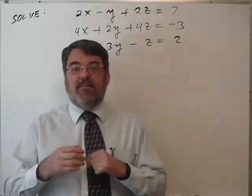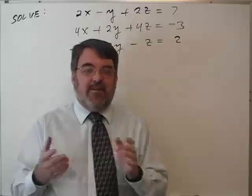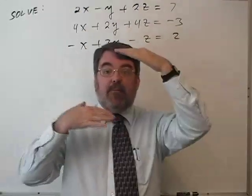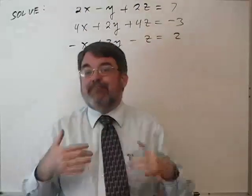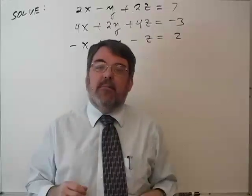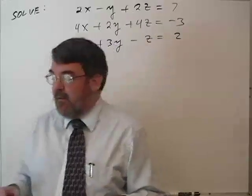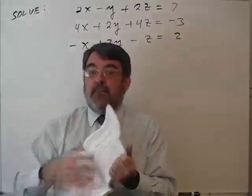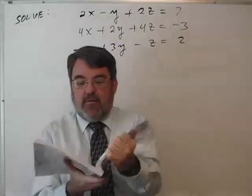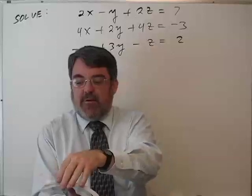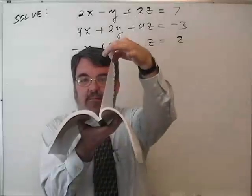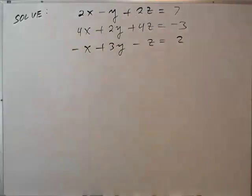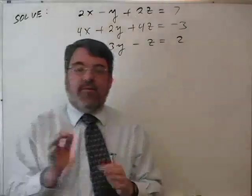It gets even more varied because if each of these represents a plane, then I could have parallel planes which never meet. I could have planes which all meet along a single line. So imagine a book and there are three planes which all meet along the spine of the book. They do not intersect in a point. They intersect in a line.